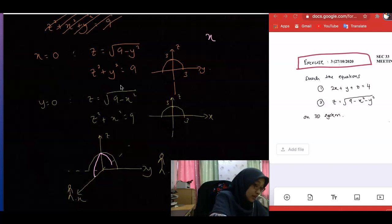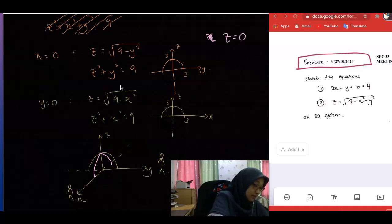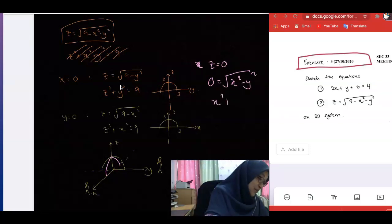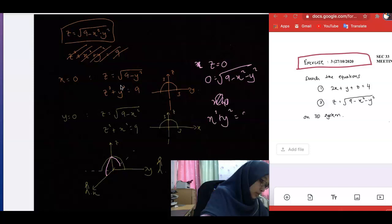So you will have 0 equal to square root of 9 minus x squared minus y squared. So x squared plus y squared equal to 9. So we have a circle with radius 3.